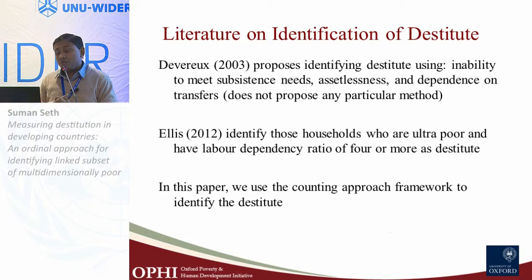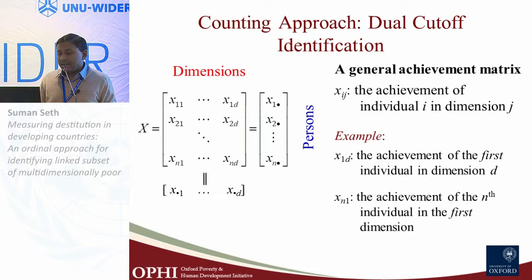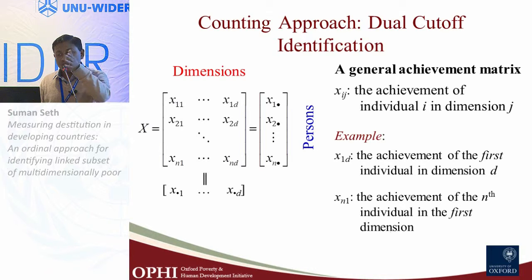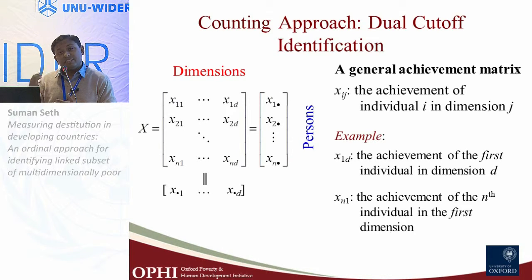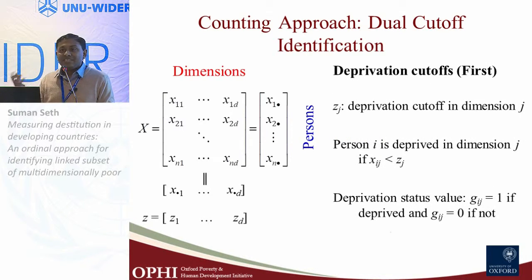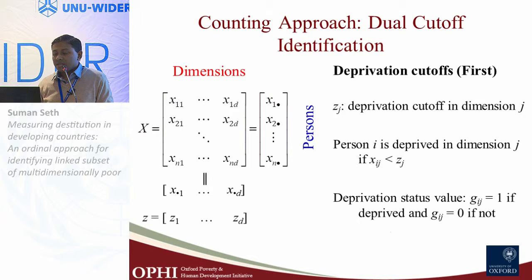In our paper, we use the counting approach framework to identify the destitute using a multidimensional concept. Briefly: in the Alkire-Foster counting approach, we have a matrix where xij denotes a person's achievement in a particular dimension, with i persons and j dimensions. Each dimension has a deprivation cutoff, based on which a person is identified as deprived or not. A deprivation status value gij is assigned — one if deprived, zero if not — forming the deprivation matrix.